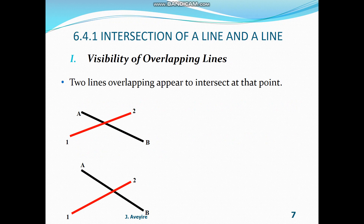The apparent intersection point 3 on line 1,2 and C appear to coincide in the front view. Now, projecting downward to the top view, taking line AB projected down, we meet point C, which is now different from point 3. They do not coincide. Therefore, these two lines overlap — they do not intersect.